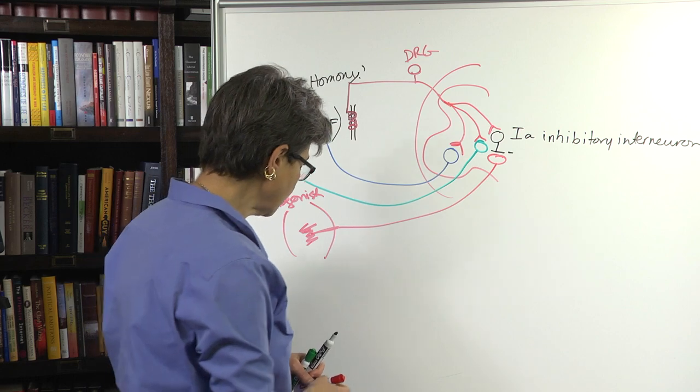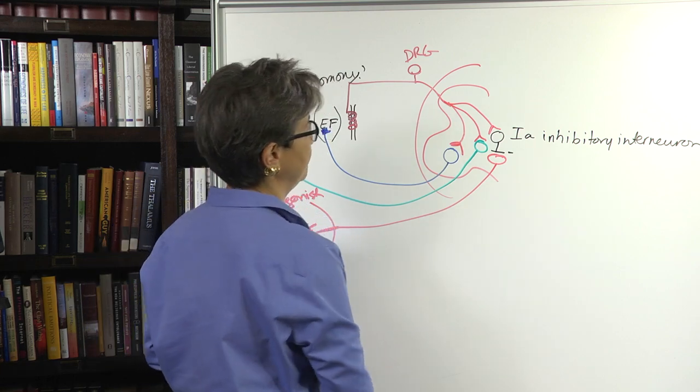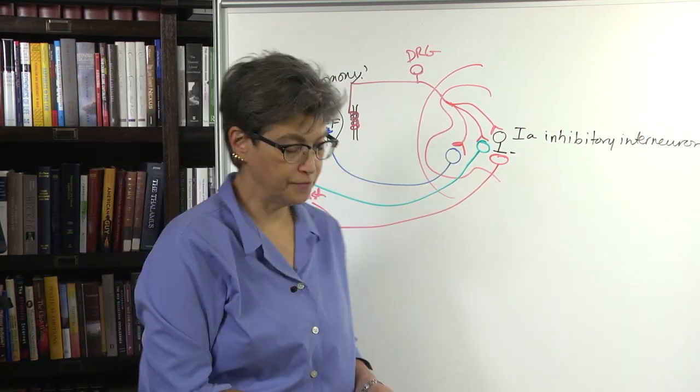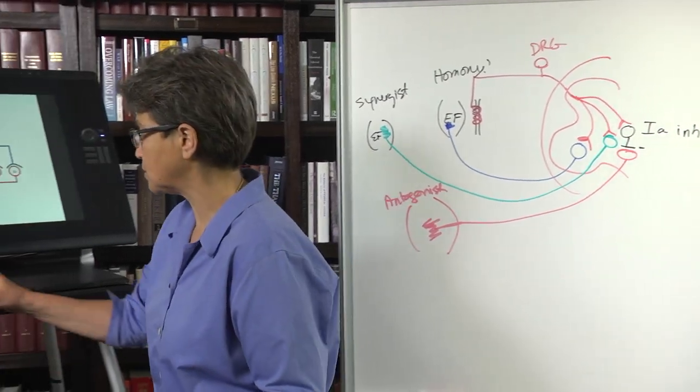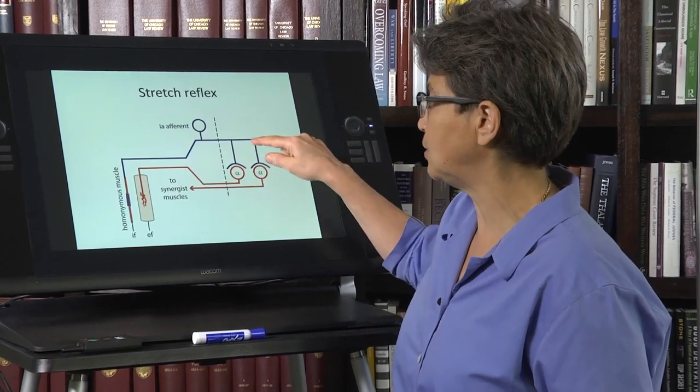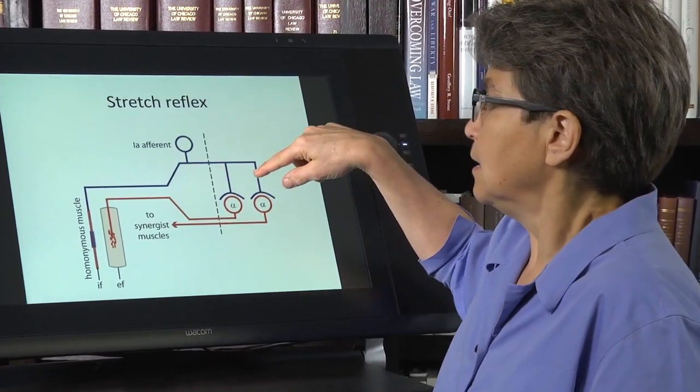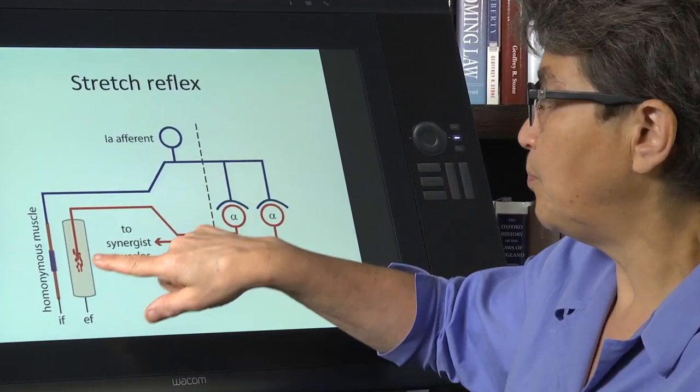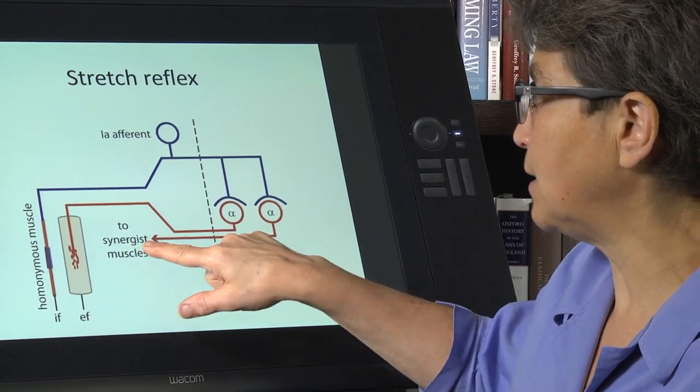So that is the basics of the stretch reflex. Let's just look at that drawn out. This, again, just shows you that the 1A afferent is going to excite motor neurons that innervate both the homonymous muscle and synergist muscles.